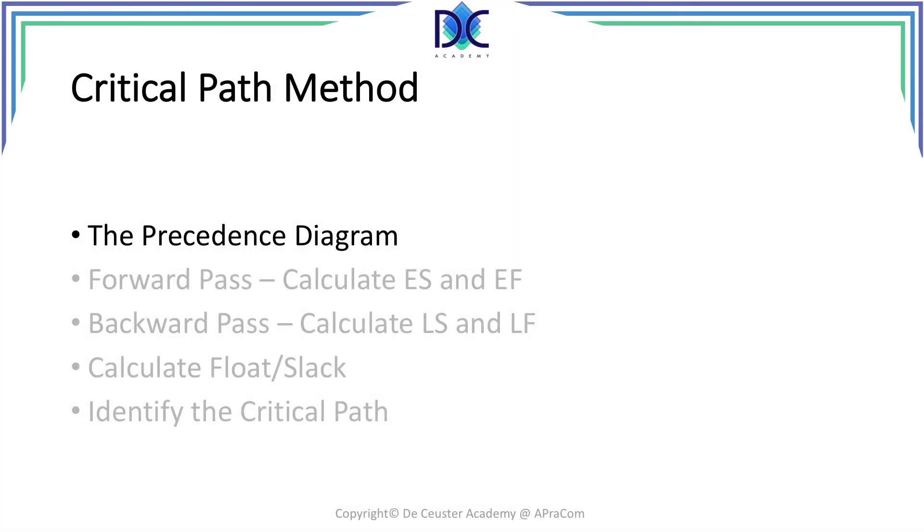So we understand how we have to make a precedence diagram and now we are going to introduce this precedence diagram in what we call the critical path method. The first step in the critical path method is the precedence diagram. The next steps of this method will be shown in the next sessions.